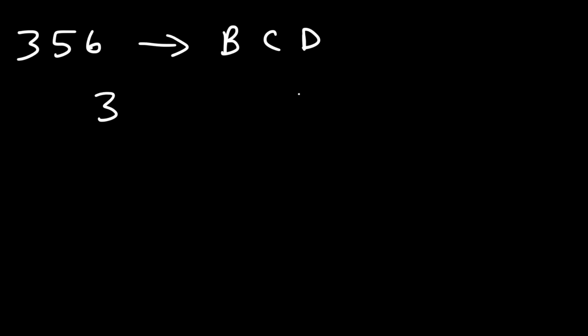First, separate each digit. Now each digit is going to be represented by a 4-bit binary code. So let's write 8 4 2 1 for each number.